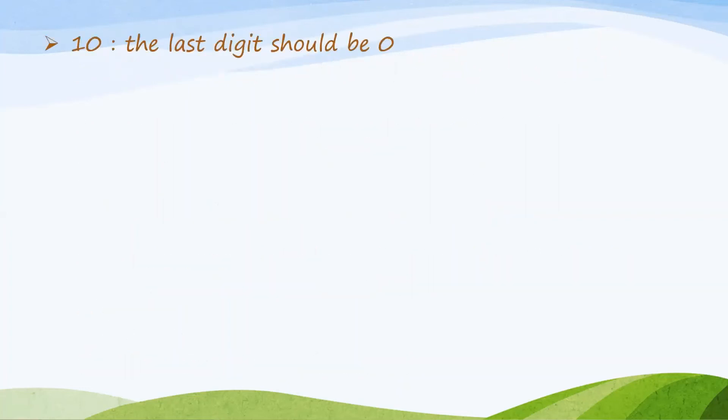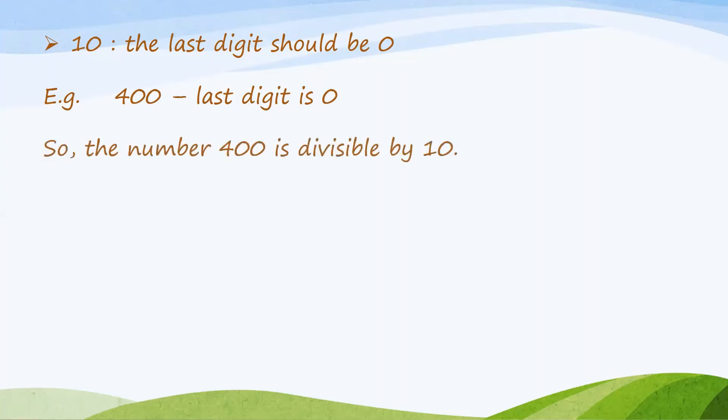The Divisibility Rule of 10 says that the last digit should be 0. For example, the number 400 — the last digit is 0. So, the number 400 is divisible by 10.